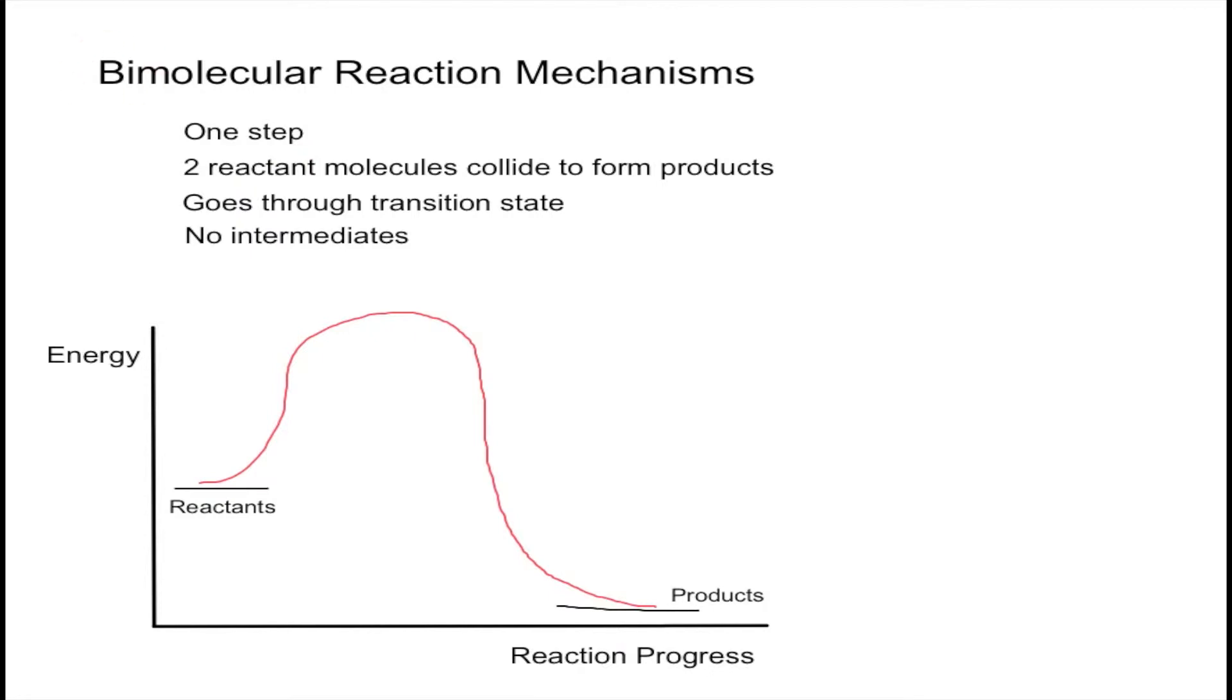This kind of mechanism will go through a transition state and will have no intermediates because it's only one step. As you may remember, intermediates need to be formed as products in one step and then consumed as reactants in the subsequent step. So given that this kind of mechanism only has one step, that can't occur.